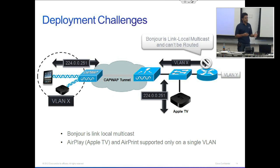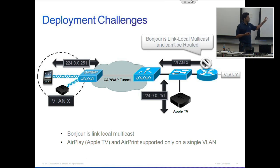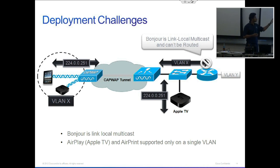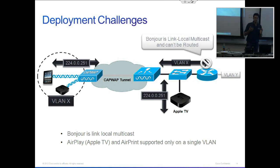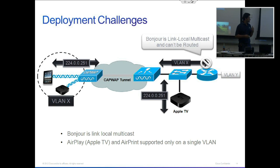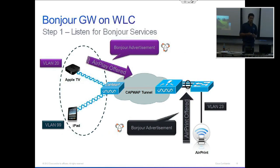What I want you to get out of this slide is: anything coming to the router is going to be dropped. There are no multicast packets that will be routed from VLAN X to VLAN Y. But in a typical large deployment, you want your services to scale — scale across VLANs, across subnets, and be available on the entire network. That is where the Cisco Bonjour gateway comes into play.